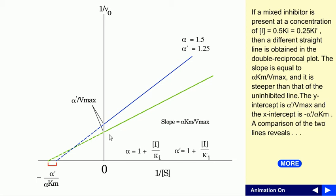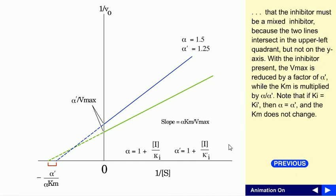The Y-intercept is α'/Vmax, and the X-intercept is negative α'/(α·Km). Comparing the two lines reveals that the Vmax is reduced by the factor α', while Km is multiplied by α divided by α'. So both the Y-intercept and the apparent Km are affected differently by α and α'.